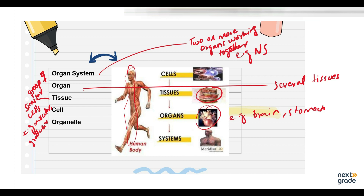After that there is the cellular level. As we all know, the cell is the basic unit of life. Cells can be multicellular — involving many cells — or unicellular, involving just a single cell. In unicellular organisms, there is only one cell performing all the functions.